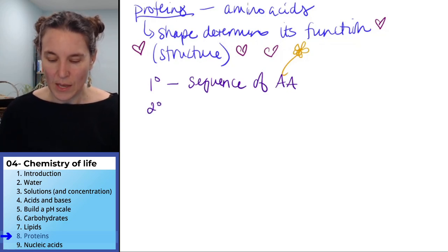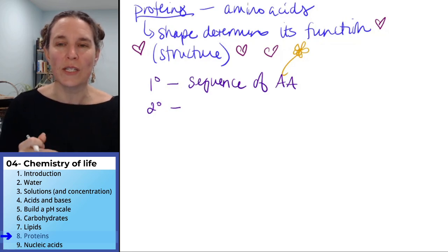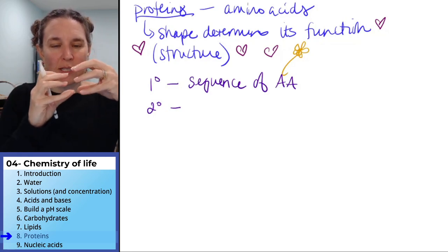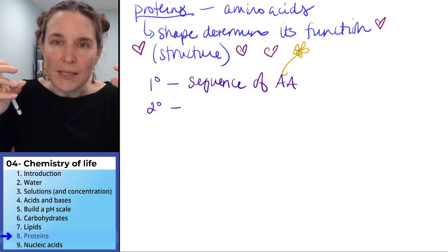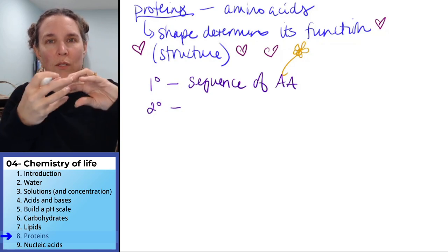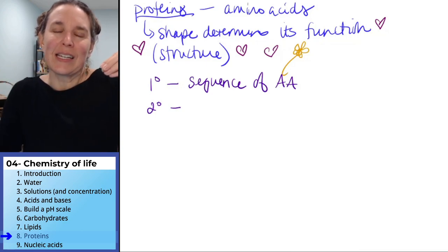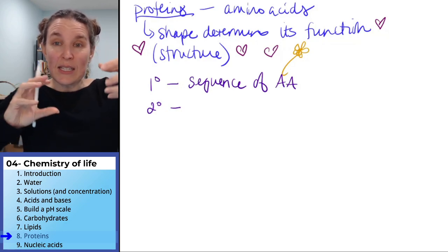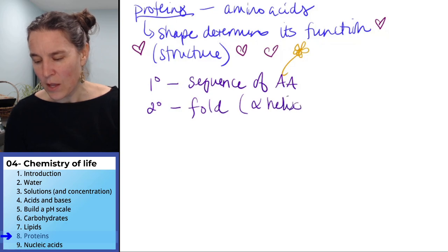Your secondary structure of a protein is actually, and this is really interesting. So you imagine a string of amino acids. Well, sometimes those amino acids are attracted to each other and the string sort of folds. And it can fold in like little accordion shapes or a little helix shape, but the actual string does these little folds. And that is your secondary structure.